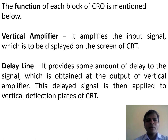The function of each block of CRO is mentioned below. The vertical amplifier amplifies the input signal which is to be displayed on the screen of the CRO. The basic function of the amplifier is to amplify, meaning to increase the strength of the input signal. For example, if the input signal is 1 millivolt, it will increase its voltage to 1 volt.